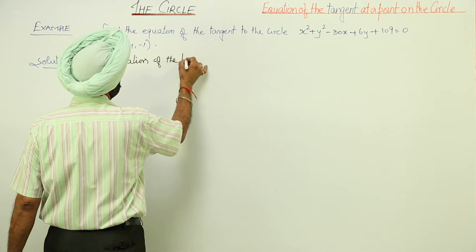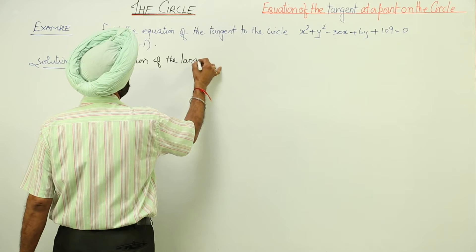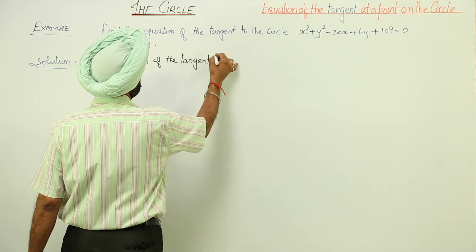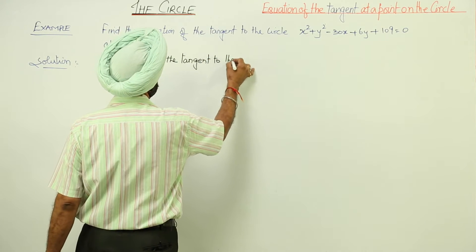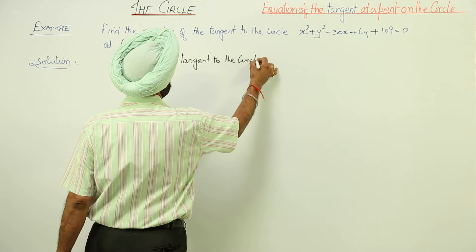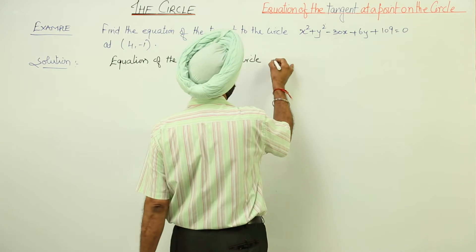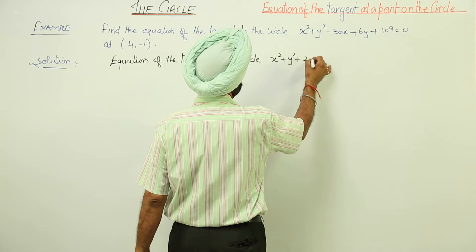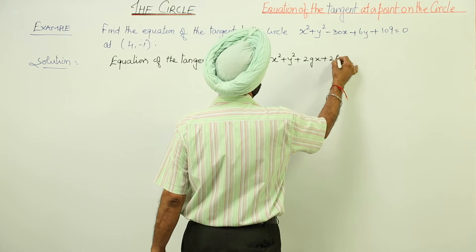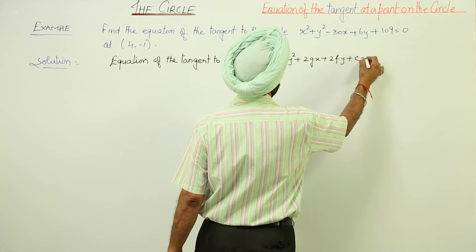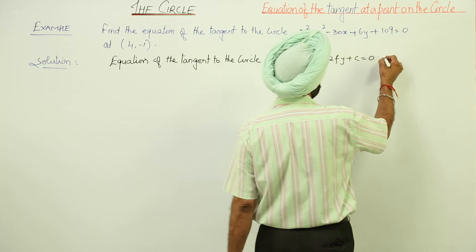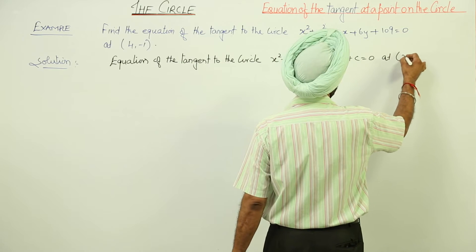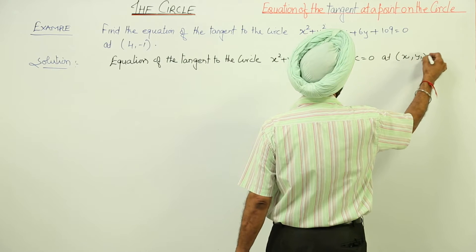Equation of the tangent to the circle x² + y² + 2gx + 2fy + c = 0 at (x₁, y₁) is: